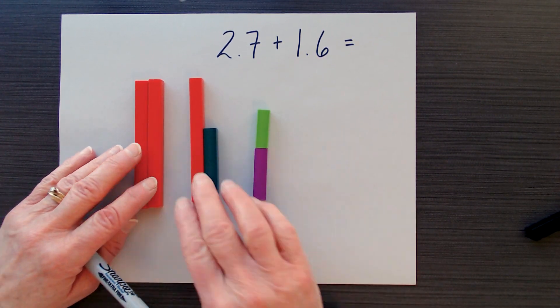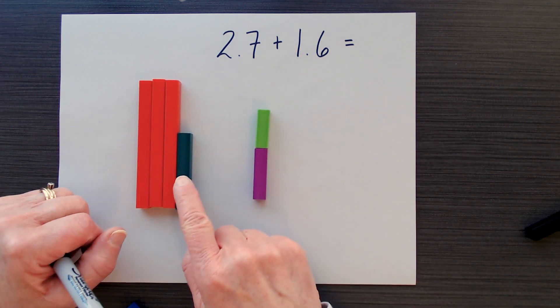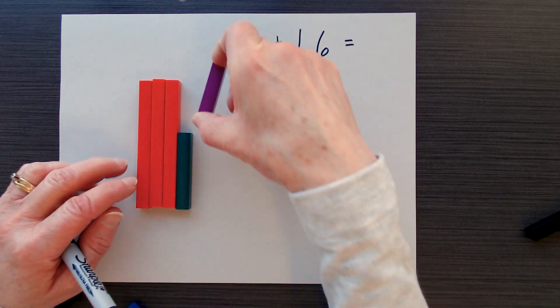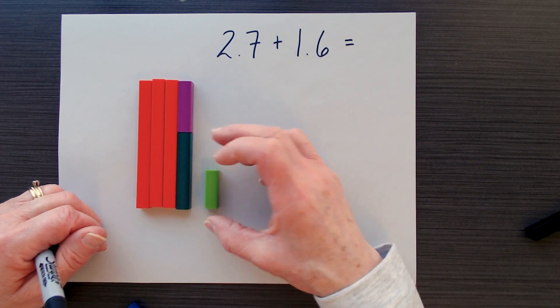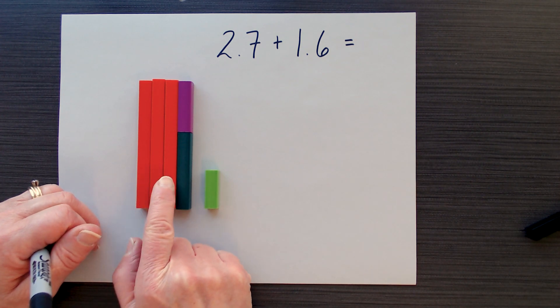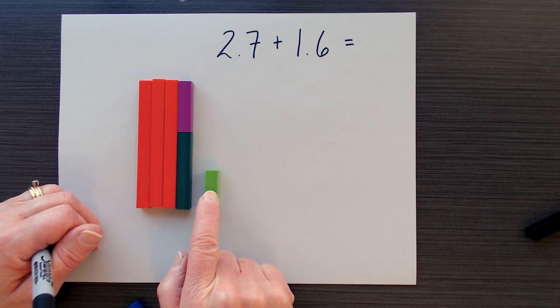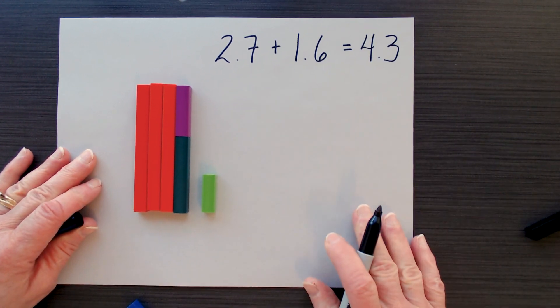So now what I'm going to do is look at putting them together. This one is 6 tenths, and that 4 tenths goes with it. So now when I look here, I have 1, 2, 3, 4, and 3 tenths.